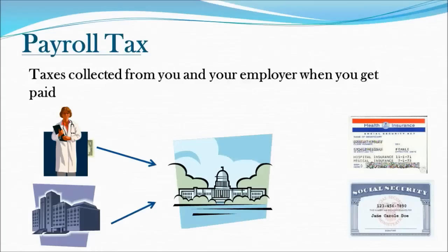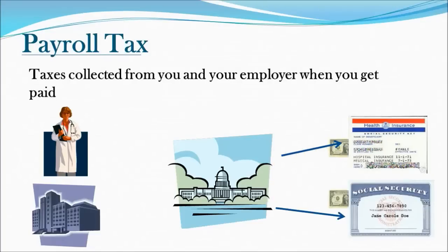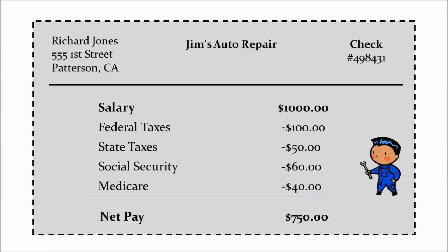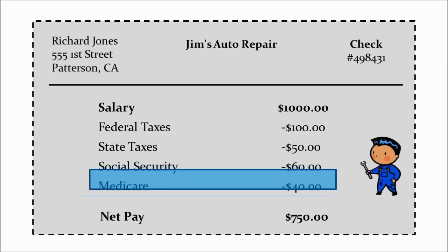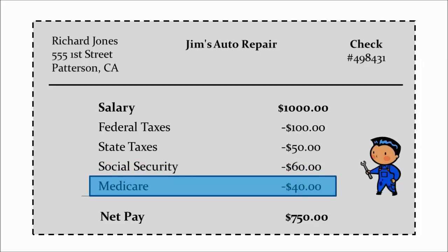Our next one is payroll tax, one of the more complicated ones because it's often confused with income tax. Both are deducted from your paycheck, but payroll taxes are taken for specific programs. Your employer collects these taxes and sends them to Washington, D.C., where the money is spent on programs like Medicare and Social Security — different from income tax, which goes to the general fund. On a $1,000 salary, the Social Security tax was $60 and the Medicare tax was $40.